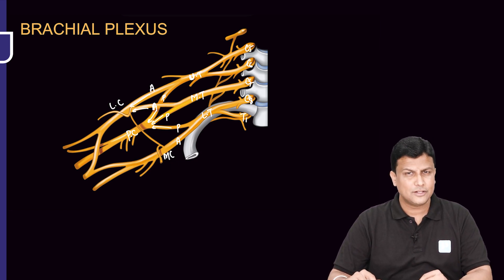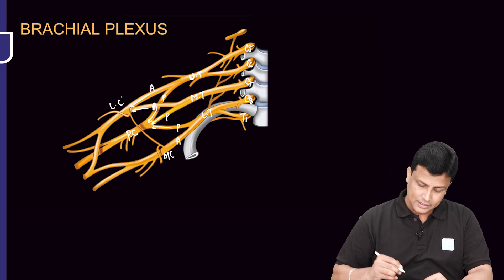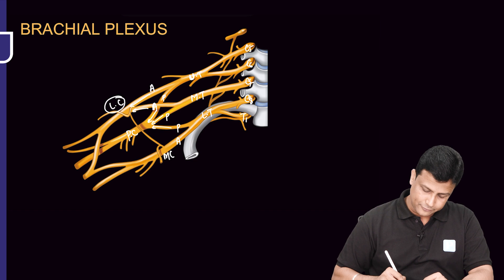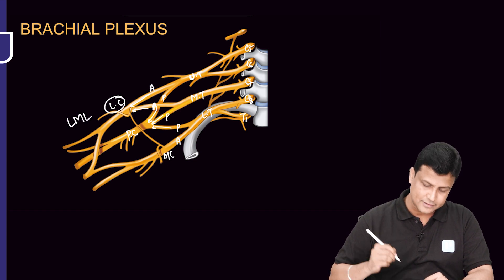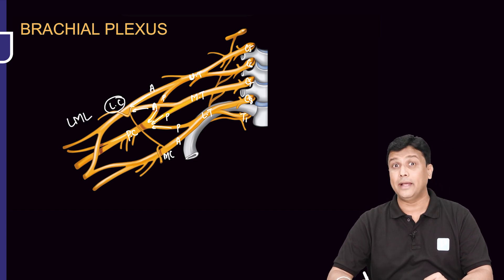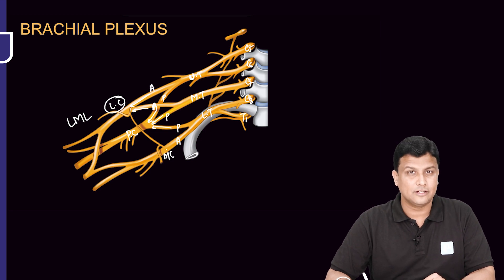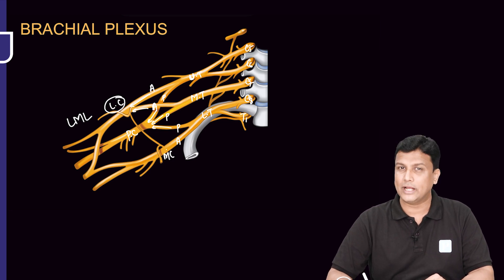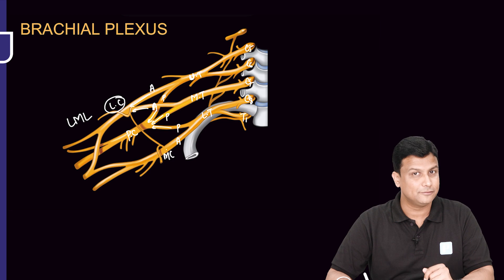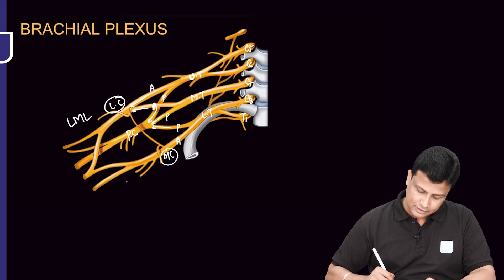All these cords give rise to branches. The lateral cord gives three branches, remembered with the mnemonic LML: L for lateral pectoral nerve, M for musculocutaneous nerve, and L for the lateral root of the median nerve.